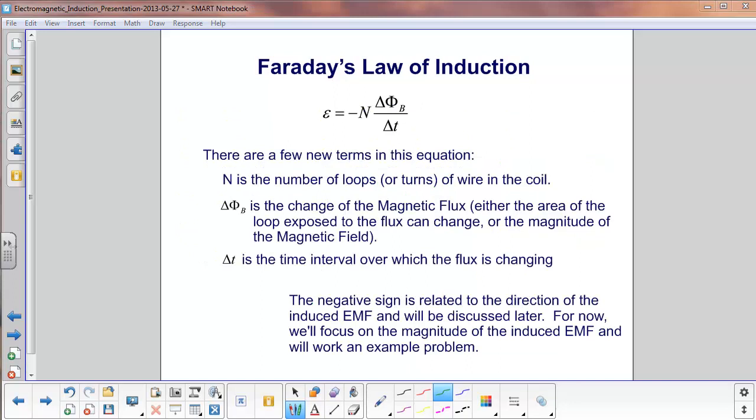Let's look at this equation in a little more detail. N is the number of loops or turns of wire in the coil. The more loops, the more EMF or voltage generated.